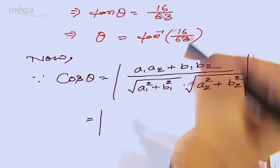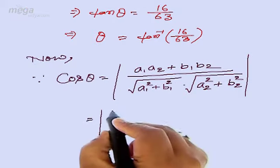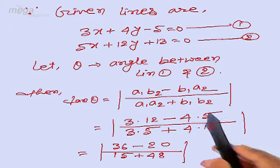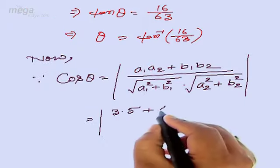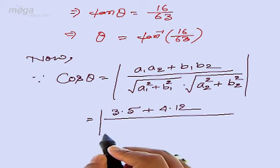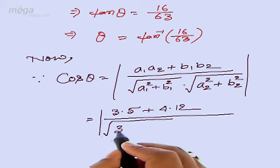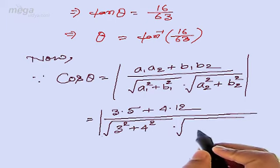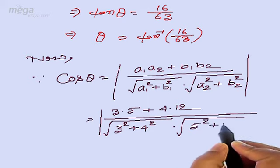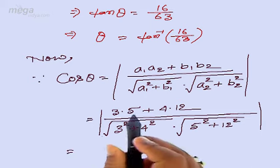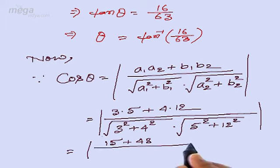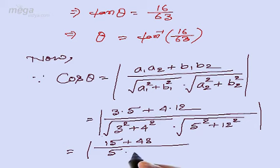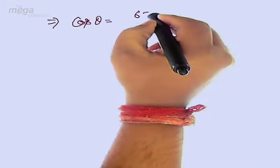Now we substitute the values: a1 is 3, a2 is 5, so 3 times 5 plus b1 b2, where b1 is 4 and b2 is 12, so 4 times 12, divided by root of 3 squared plus 4 squared into root of 5 squared plus 12 squared. This gives 15 plus 48 divided by root of 25 which is 5, times root of 169 which is 13. So cos theta is equal to 63 upon 65.